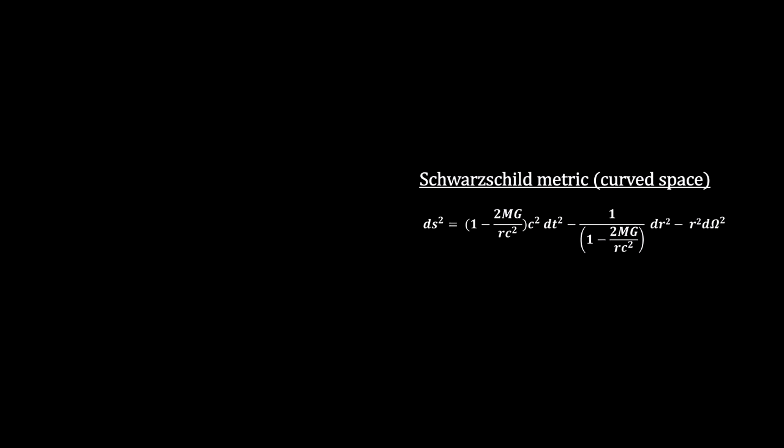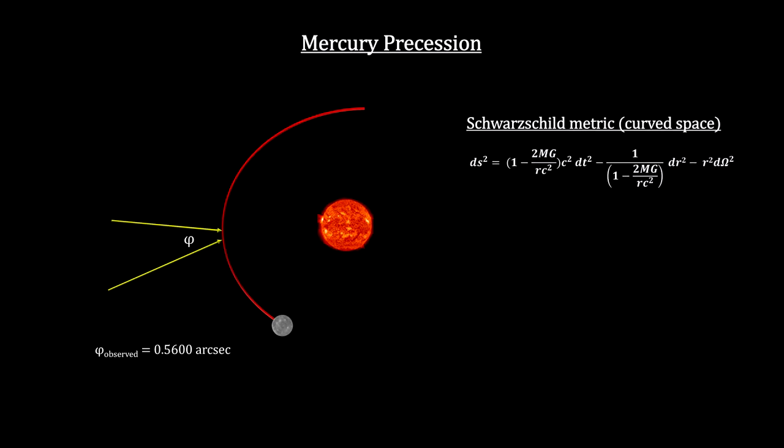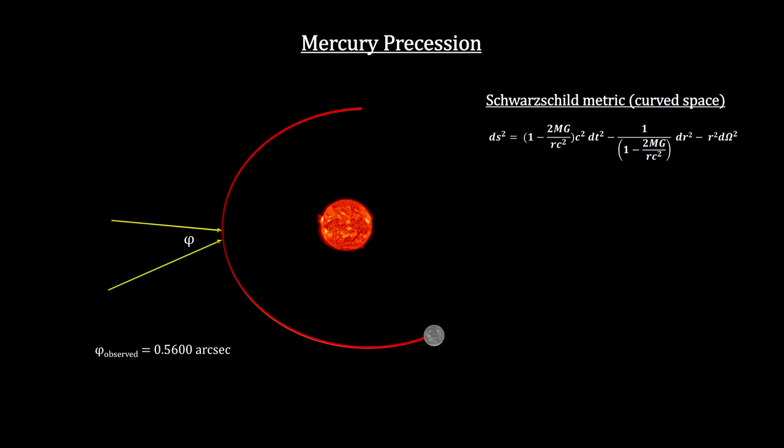As seen from Earth, the precession of Mercury's orbit is measured to be 0.56 arcseconds per orbit. An arcsecond is 1/3600ths of a degree.